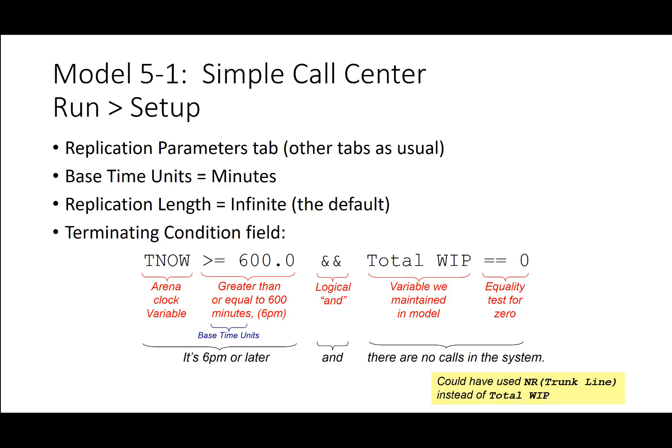Under run setup, the replication parameters tab requires edits. Base units should be set to minutes. The replication length is set to infinite as the default. In the terminating condition field, the ARENA clock variable should be set to stop at 600 minutes for 6 p.m., using double ampersands, and total WIP equals zero, so the simulation does not stop until after 6 p.m. with no calls remaining.